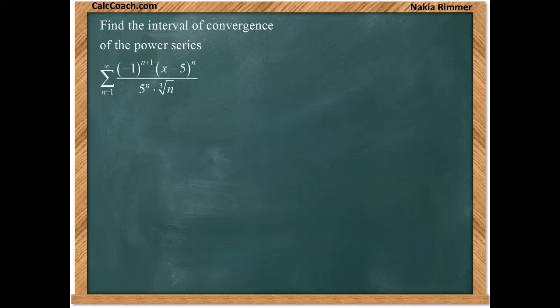Find the interval of convergence of the power series from 1 to infinity, alternating sign negative 1 to the n plus 1, times x minus 5 to the n, all divided by 5 to the n and the cube root of n.